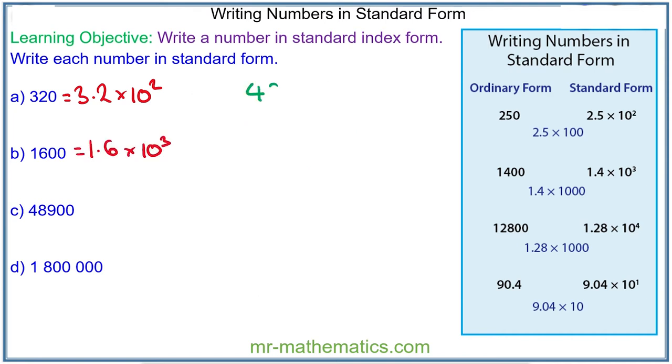Question C: 48,900. To write it as a power of 10, in standard form we have 4.89 multiplied by 10,000. 10,000 we can write as 10 to the power of 4. You can see we have 4 zeros. So in standard form it is 4.89 times 10 to the power of 4.